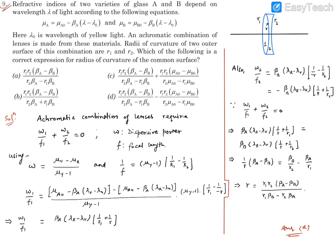Question number 9. It reads, refractive indices of two varieties of glass A and B depend on wavelength of light according to the following relation. Where lambda naught is wavelength for the yellow color light, an achromatic combination of lenses is made from these materials. Radii of curvature of the outer surfaces of the combination is given as R1, R2, which of the following is the correct expression of the radius of curvature of the common surface.